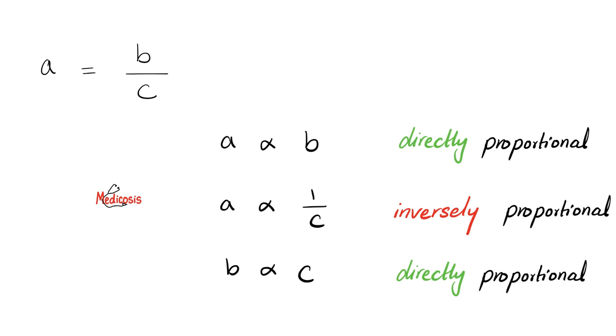If I write an equation like this, a equals b over c, it means that the relation between a and b is direct or directly proportional. If b goes up, a goes up. If b goes down, a goes down, provided that c remains constant.